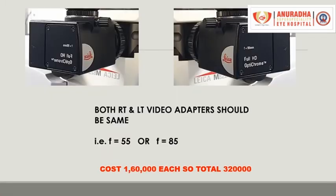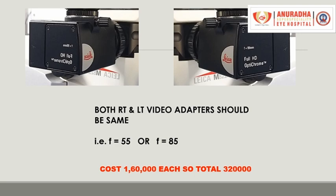Video adapters are to be attached to the right and left side of the beam splitter, and they should be exactly the same — that is, f equal to 55 or f equal to 85 — so as to give you exactly the same images that can be matched in a video multiplexer.